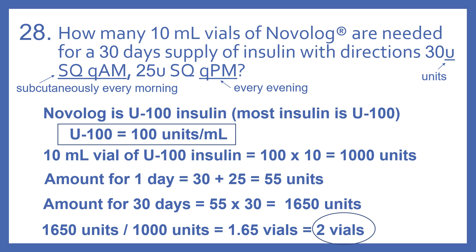So now for 30 days, we would have 55 units times 30 days, which comes out to 1,650 units needed for 30 days. So now if we take 1,650 units divided by 1,000 units — that was the amount in a 10 ml vial — that gives us 1.65 vials.